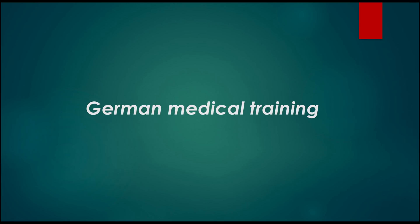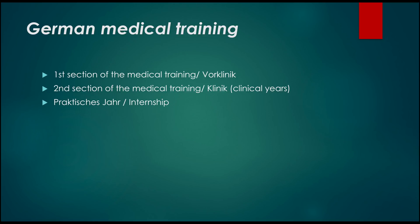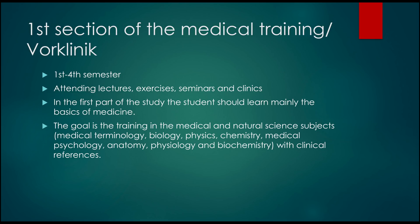First, I will explain the German medical training system. It is divided mainly into three sections: the first part is called Vorklinik, the second part is the clinical years, and the last one is the internship or practical year. The first section, Vorklinik, contains four semesters — the first two years — where one has to attend lectures, seminars, and clinical visits, learning the basics of medicine.